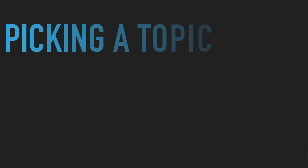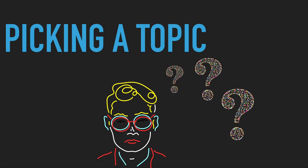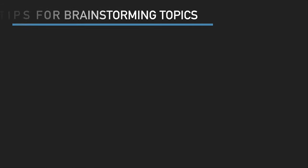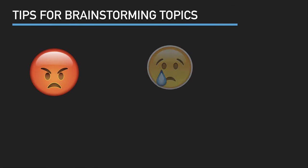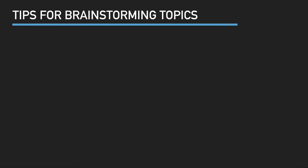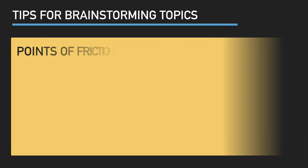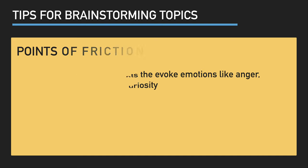Sometimes picking a topic is the hardest part of writing a research paper. Here are some ideas to help you during your brainstorming process. Create a list of things that make you angry, sad, excited, or curious. Let's call these points of friction. They might be something you can examine and turn into a research topic.